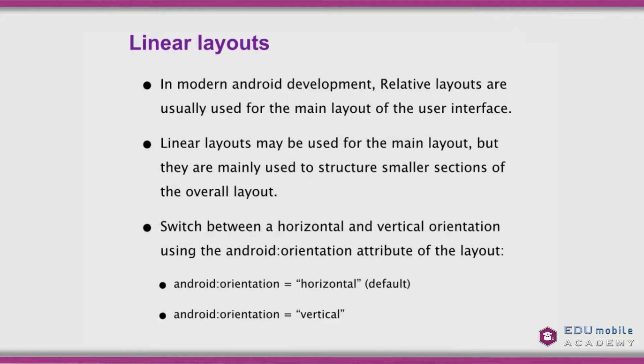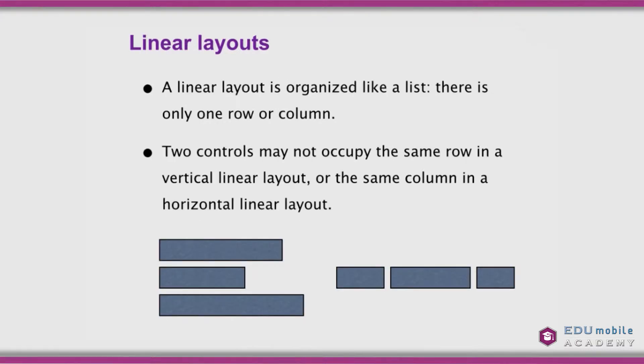The linear layout's orientation is controlled by the android:orientation attribute. If this is horizontal — and that's the default — the controls in a linear layout will be laid out in one row and multiple columns. However, if it's vertical, they will be laid out in multiple rows, but only one column.